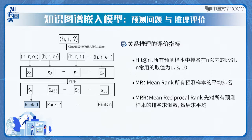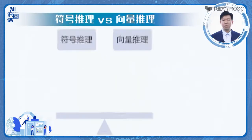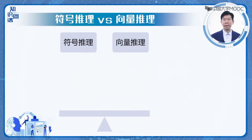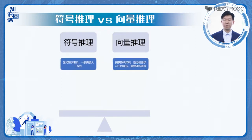评价指标方面：Hit at N指所有预测样本中排名在N以内的比例；MR指Mean Rank，即所有预测样本的平均排名；MRR指Mean Reciprocal Rank，先对所有预测样本的排名求倒数，然后计算平均值。我们来对基于符号表示的推理和基于向量表示的推理做一个比较：符号表示是一种显式的知识表示，一般需要人工来定义，而向量表示主要是依靠大量训练语料，通过机器学习模型学习出来的表示。